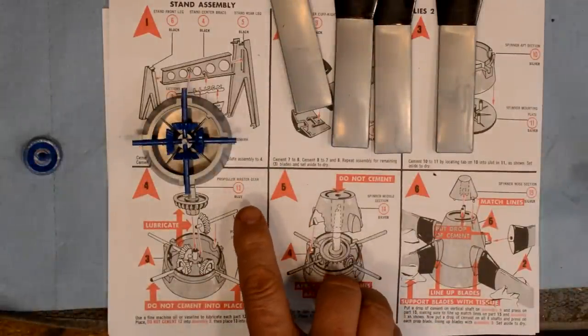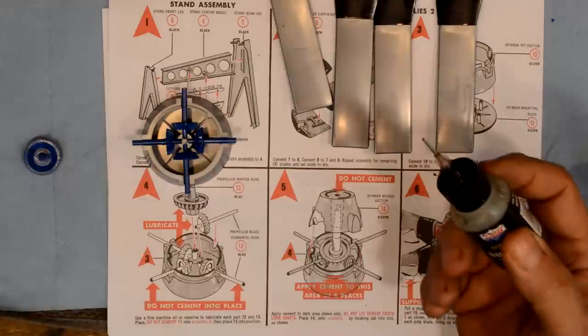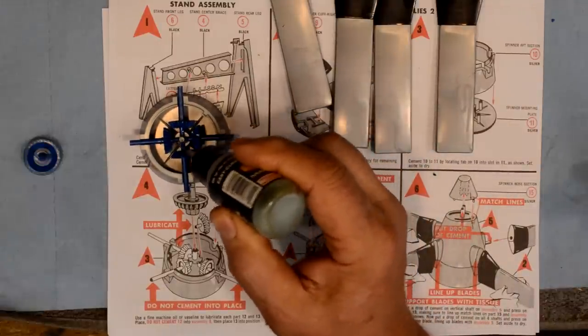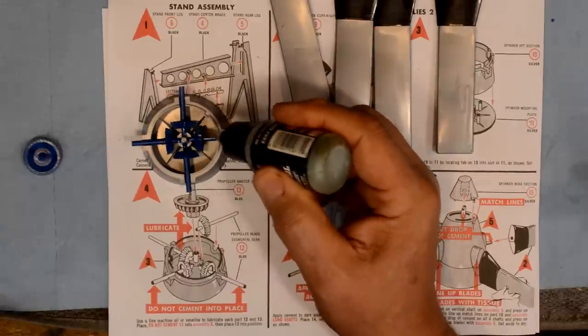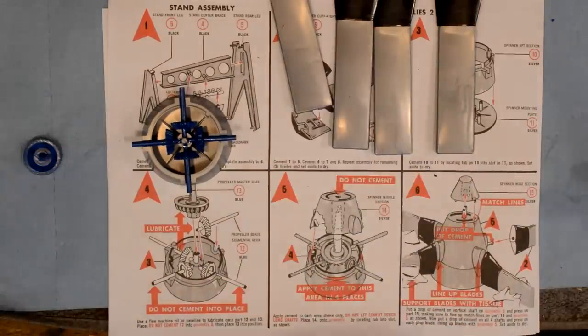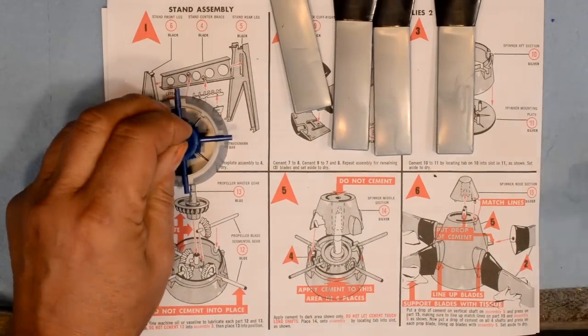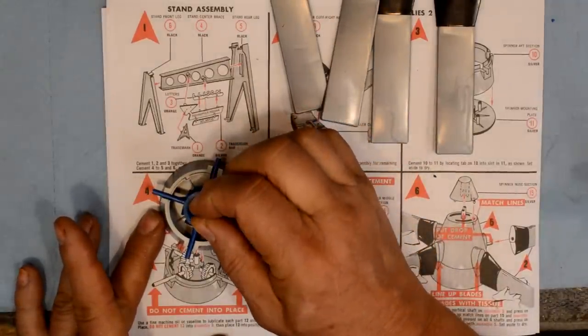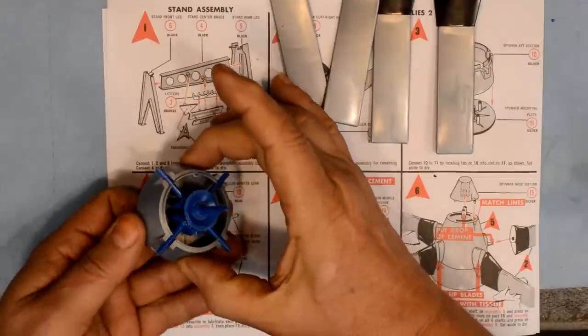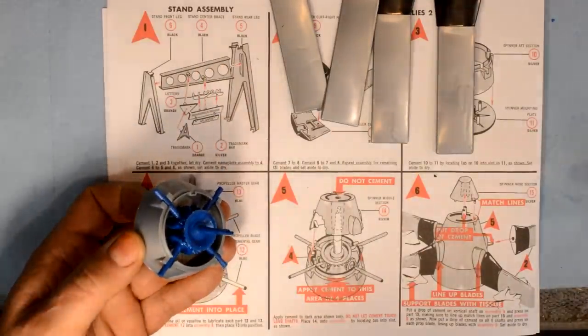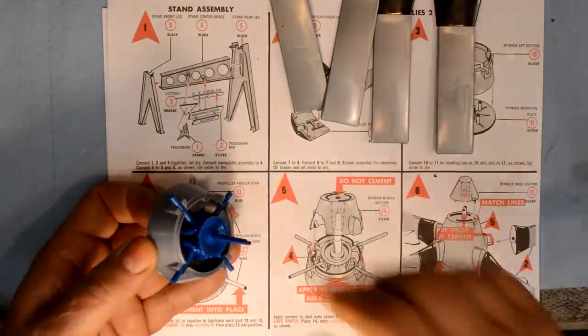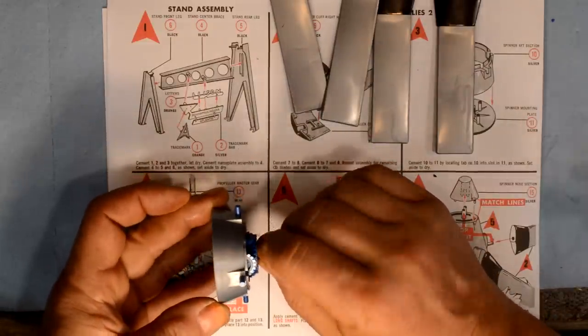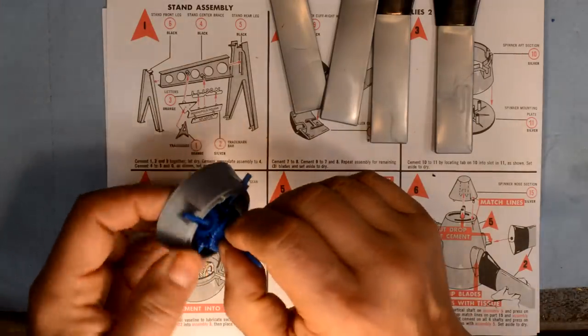When it says lubricate, we're going to lubricate with gun oil. We're putting a little bit of oil where this plastic runs on plastic. What this allows is that as this center shaft turns, all those individual shafts will turn. As this turns, these outer ones turn also. We'll put some blades on it and see what we come up with.